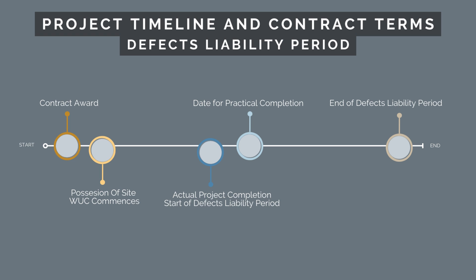Let's now look at the defects liability period. The defects liability period commences from the actual project completion date, not the date written into the contract. So if we're early in completing the project, the defects liability period will start early, and if we're late, it will start late.